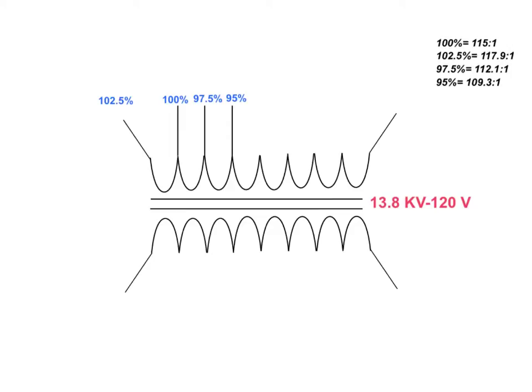So again, just to recap because it's very important: We take the 100% ratio first. We get that by going 13,800 divided by 120 to get the 115 to 1 turns ratio. Then we base these other taps off of that 100% tap. So I go 115 times 1.025 to get 117.9. I take 115 times 0.975 to get 112.1, and I take 115 times 0.95 to get 109.3.